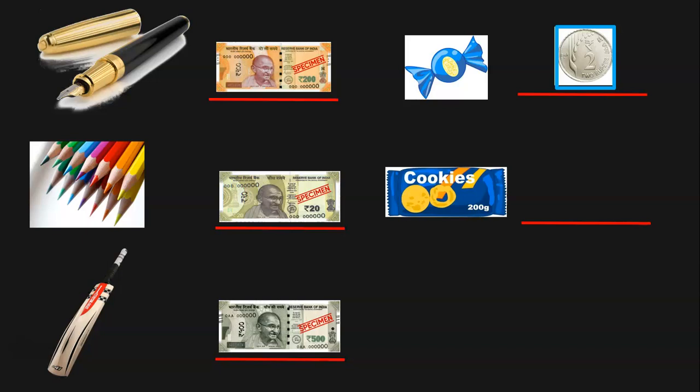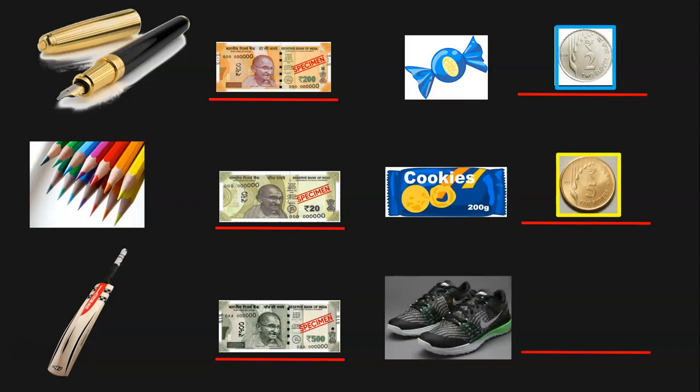Next, we have a packet of cookies — what could be the price? It could be 5 rupees. And now we have a pair of sports shoes — what could be the cost? It looks expensive. Yes, it is 2,000 rupees.